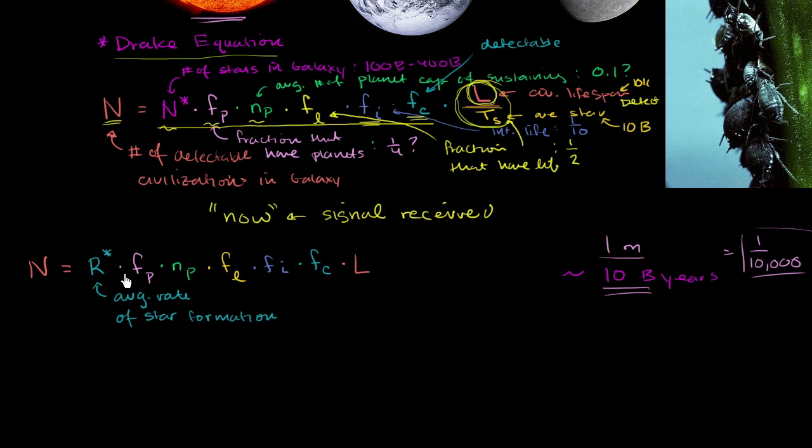But anyway, the whole point here is to reconcile this thing, which is less intuitive, for me at least, than with this thing. Because I started up here with the total number of stars in the galaxy, the traditional Drake equation starts with the average rate of star formation. So I was like, well, how does the average rate of star formation gel with the total number of stars or civilizations that are now detectable?